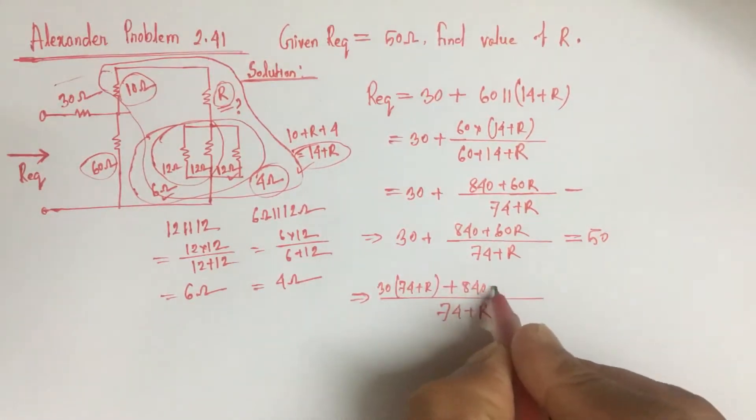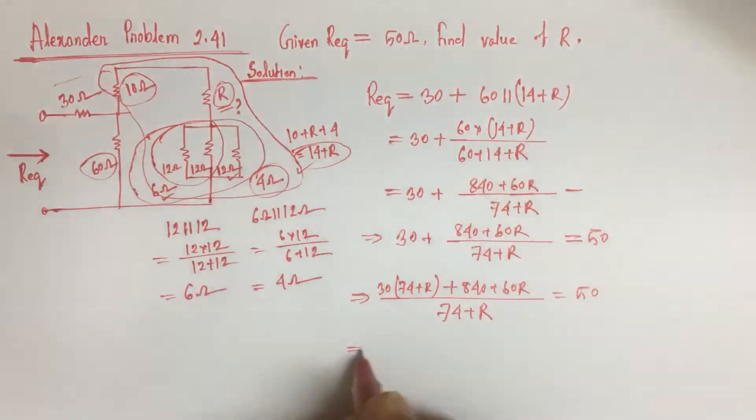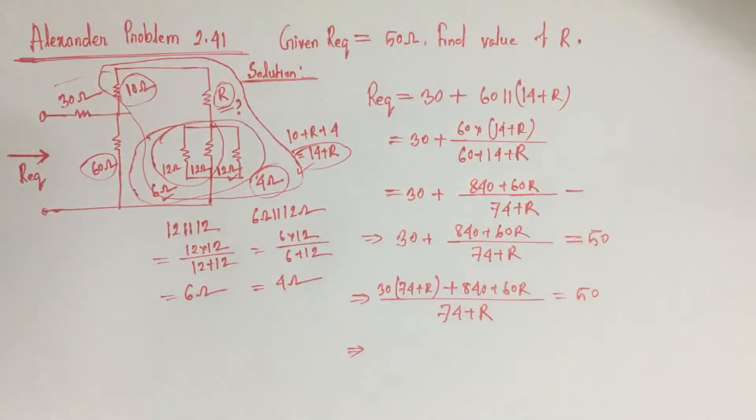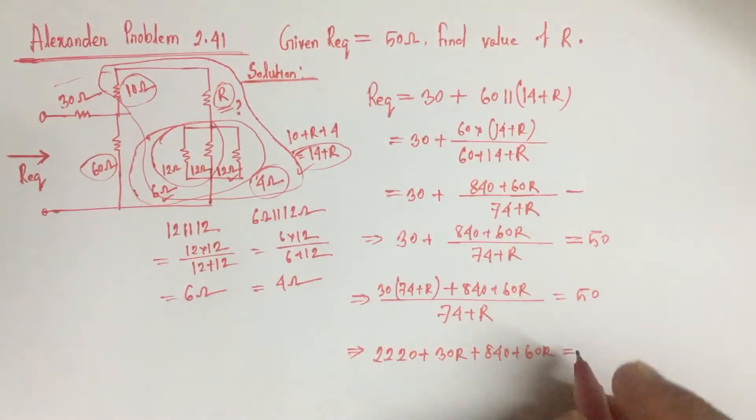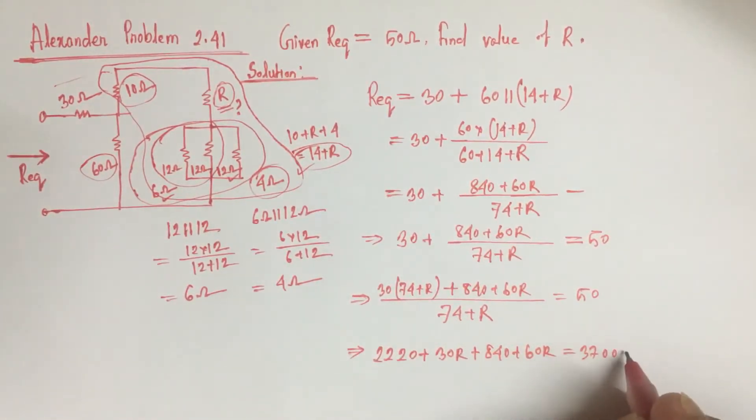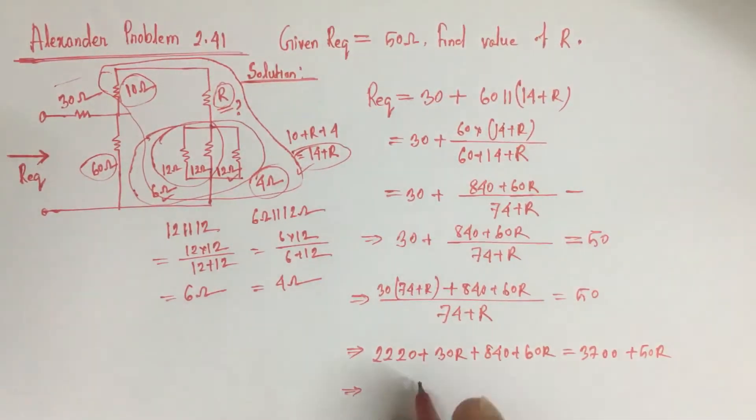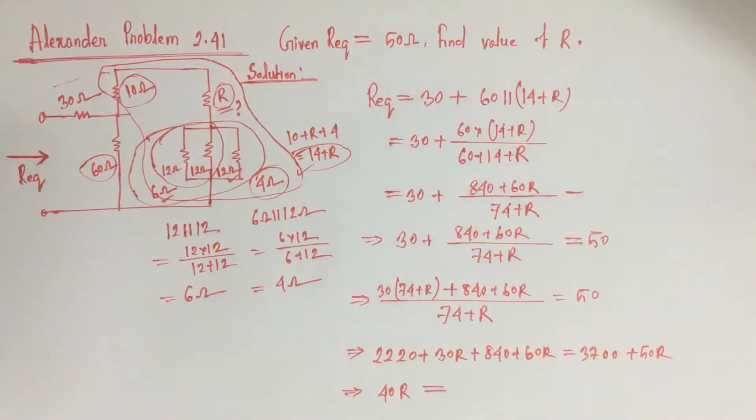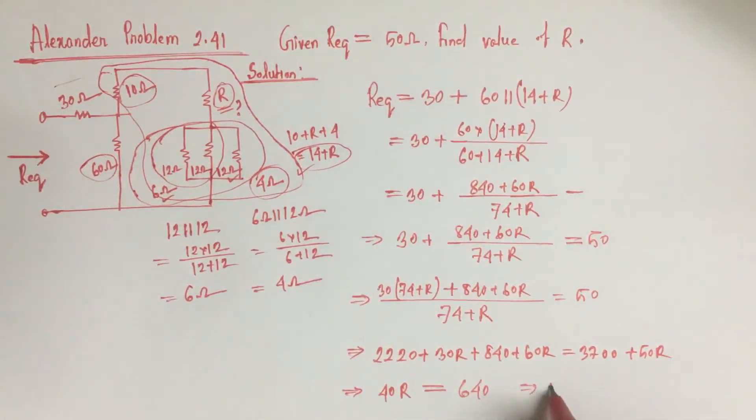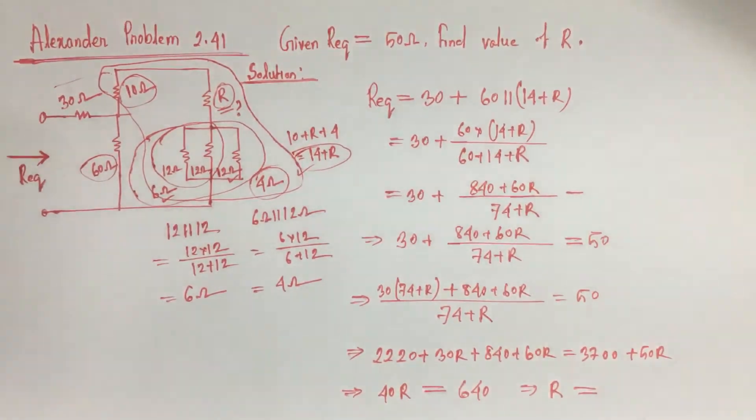If we solve the equation, 30 into 74 is 2220 plus 30R plus 840 plus 60R equals 50 into 74, which is 3700 plus 50R. That gives us 40R equals 3700 minus 2220 minus 840 equals 640, so R equals 16 ohm.